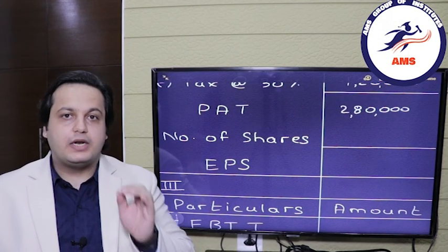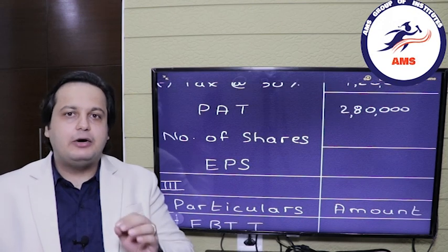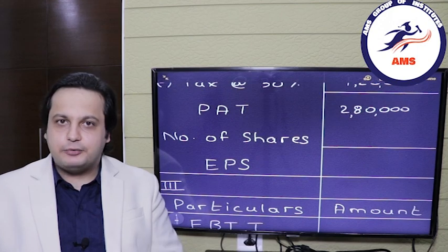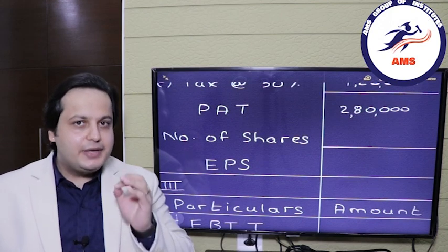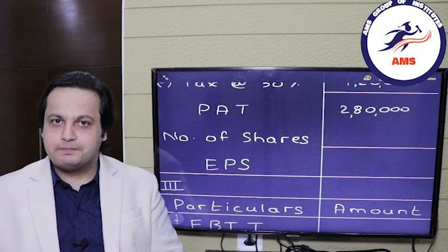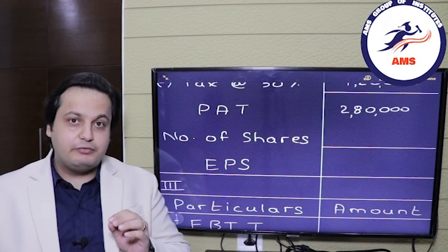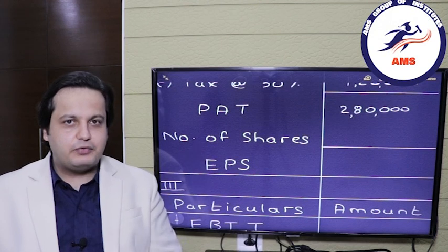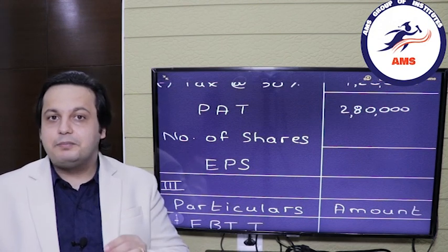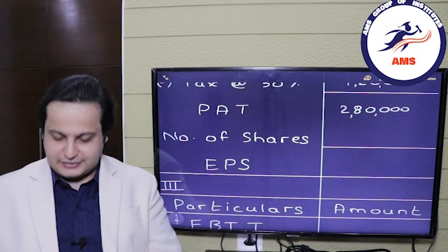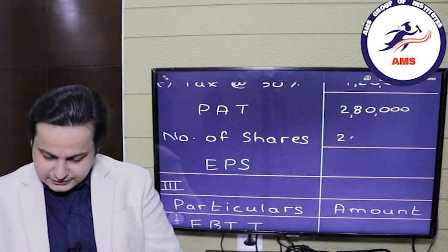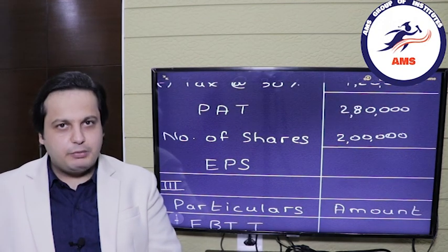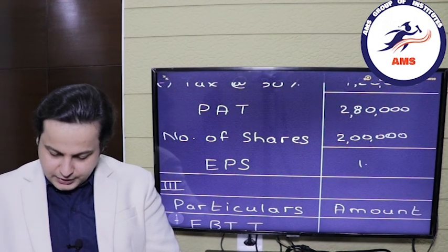The number of shares is calculated from the share capital. The total requirement was 30 lakh rupees; in case 2, we have taken a debt of 10 lakh rupees, so the equity share capital is 20 lakh rupees. Dividing by the face value of 10 rupees gives us 2 lakh shares. Putting this into the EPS formula, we get an EPS of 1.4.